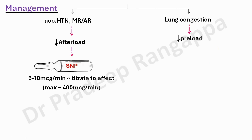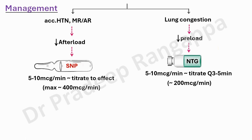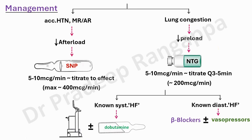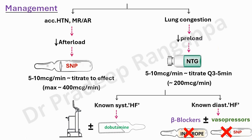If there is lung congestion, reduce preload with NTG at 5–10 micrograms, titrated every 3–5 minutes, maximum up to 200 micrograms per minute. For systolic dysfunction, dobutamine, vasopressors, or balloon pump can be considered. For diastolic heart failure, use beta blockers; avoid inotropes or sodium nitroprusside as these can worsen diastolic heart failure. ADHF with decompensation at higher blood pressure and lung congestion follows this framework.